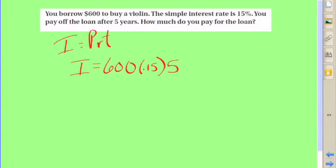So you would set this up as 600 being your principal, 0.15 is your rate, and 5 is the amount of time in years. So you simply have to do a little bit of this math.